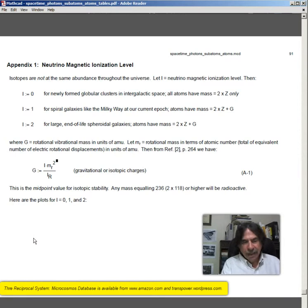And g, of course, again, means gravitational or isotopic charges. This is the midpoint value for isotomic stability. Any mass equaling 236, which is 2 times 118, or higher in our sector of the universe will be radioactive.